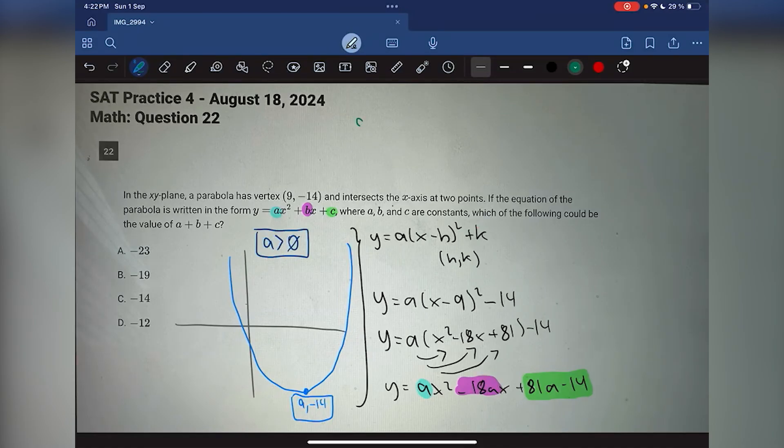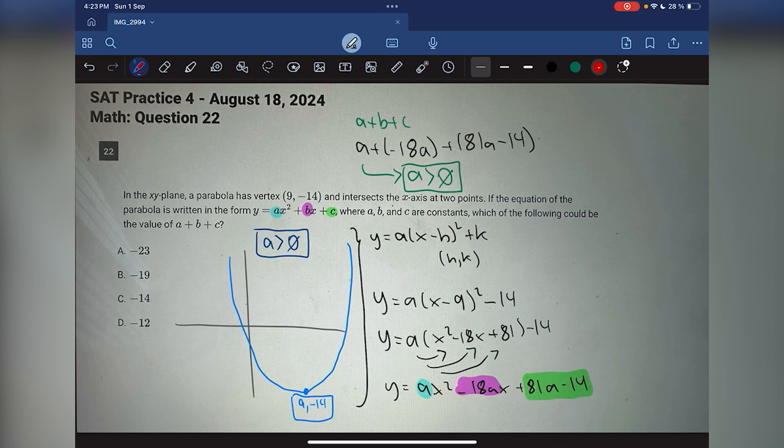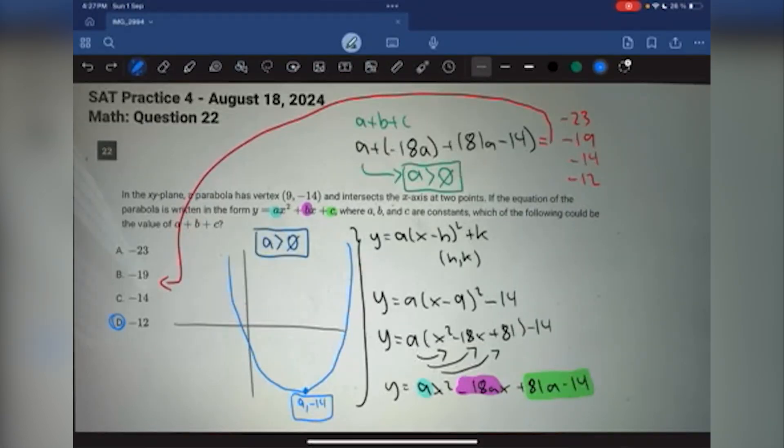So remember the question is asking us for a plus b plus c, which is actually a plus negative 18a plus 81a minus 14. And notice something about this equation, which is that it is in terms of a. The only variable we have here is a. And what do we know about a? Well, we know that it is greater than zero or positive. So if we were to set this equation equal to any of the answer choices we have in here, negative 23, negative 19, negative 14, and negative 12, whichever one of those answer choices is correct, we'll have to give us a positive a. And in this case, the answer is actually option d, which is negative 12. And why is it option d? Well, because the rest of the options give us a negative a. And option d is the only one that gives us a positive a, which is what we want.